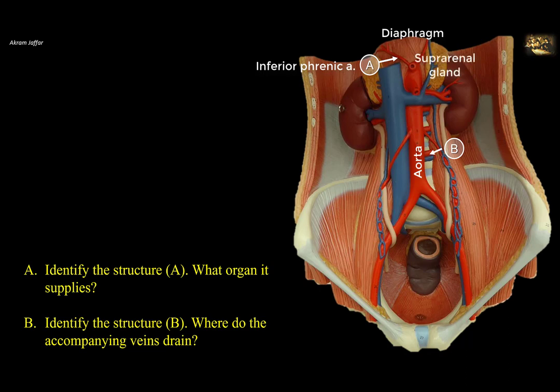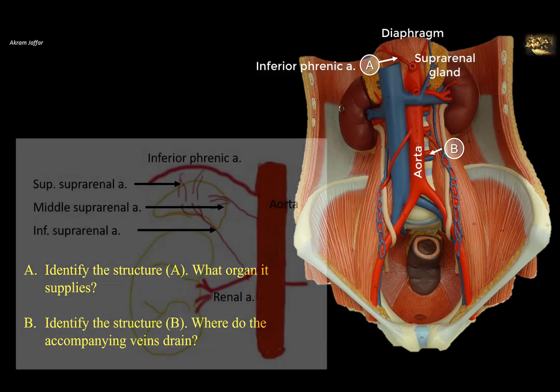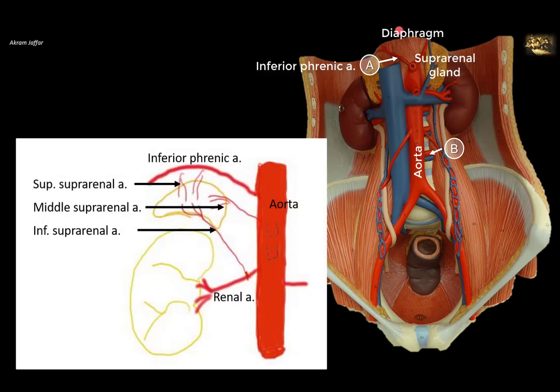Apart from the branches to the diaphragm, the inferior phrenic arteries also supply arteries to the suprarenal gland. These arteries are called superior suprarenal arteries, because the suprarenal gland has three sources of blood supply: from the inferior phrenic — superior suprarenal; middle suprarenal, directly from the aorta; and inferior suprarenal, which comes from the renal artery.